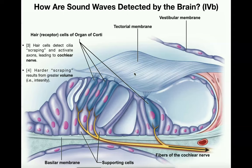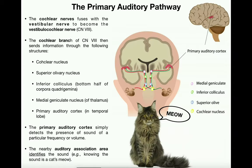The cochlear nerve is half of the vestibulocochlear nerve, which is cranial nerve eight (VIII). The cochlear nerve converges with the vestibular nerve — which will be discussed in the next set of videos — to become the vestibulocochlear nerve. Now we move to the primary auditory pathway: the route that axons take to reach the primary auditory cortex.